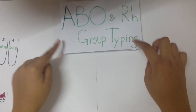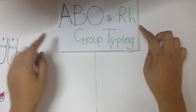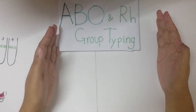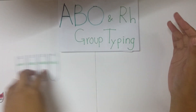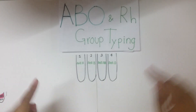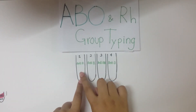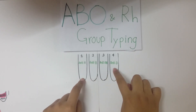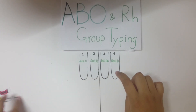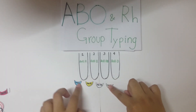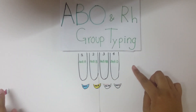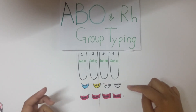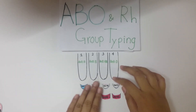So right now I'm going to talk about ABO and RH group typing. What we need for this group typing is four test tubes, labeled NT-A, NT-B, NT-AB, and NT-D, the reagent for each of the test tubes, as well as the patient's blood.